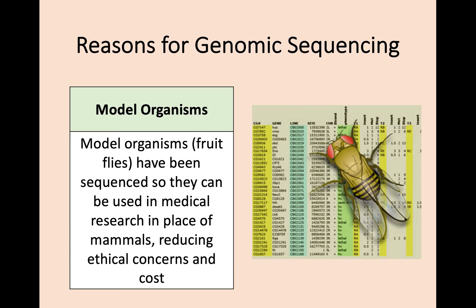For example, one of the common model organisms you can come across is the fruit fly, Drosophila. They only live for one day and you can breed them very quickly. You can do a lot of genetic tests on them without harming say a mouse, and this takes away some of the ethical issues.